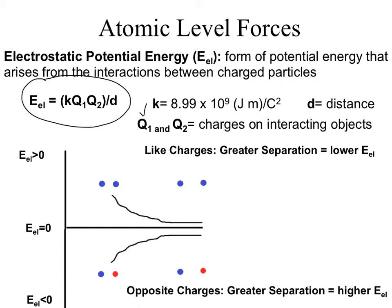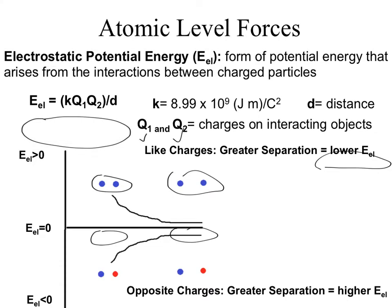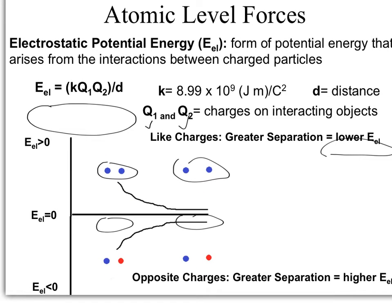Depending on whether you have like charges or opposite charges, that's going to dictate the potential energy that arises as they get closer or farther apart. When you have like charges, the greater the separation between the ions, the lower the potential energy. For oppositely charged ions, the greater the separation, the higher the potential energy. Mathematically, the bigger your denominator — the bigger your distance — the smaller your overall E sub EL value.